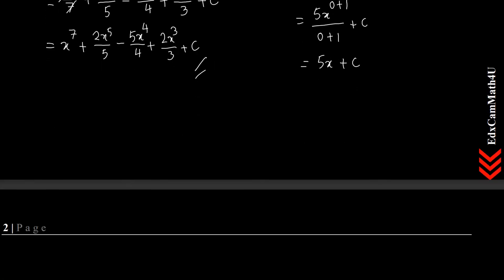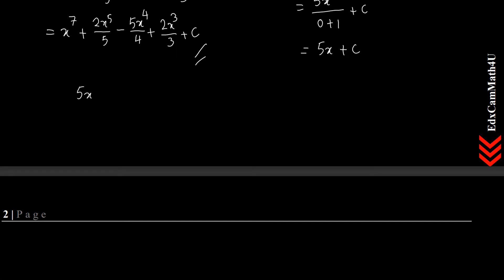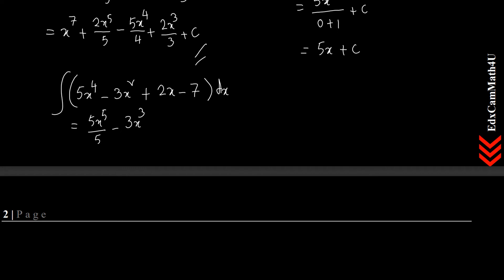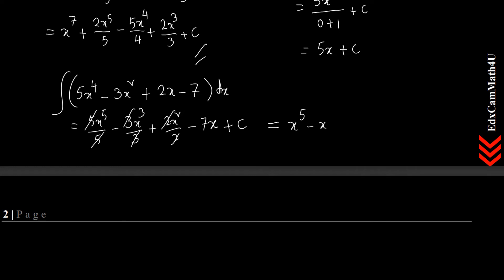For the expression 5x to the power 4 minus 3x squared plus 2x minus 7, integrating term by term gives: 5x to the power 5 divided by 5, minus 3x cubed divided by 3, plus 2x squared divided by 2, minus 7x plus C. Simplifying by cancelling common factors: x to the power 5 minus x cubed plus x squared minus 7x plus C.